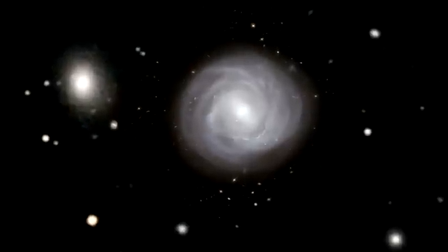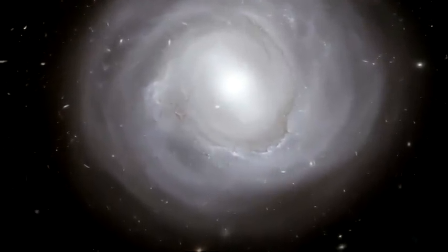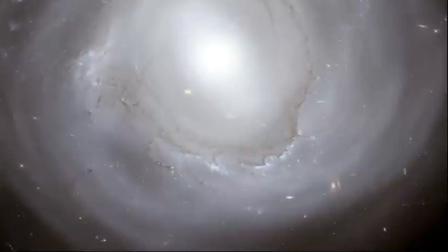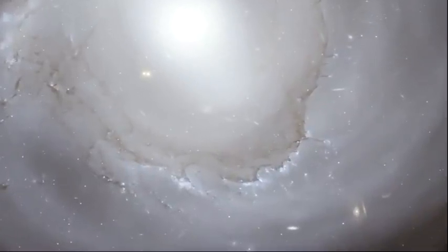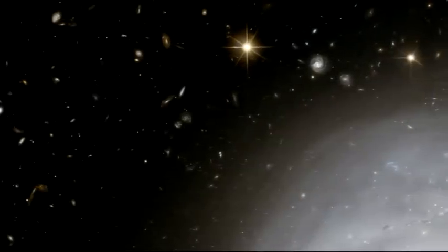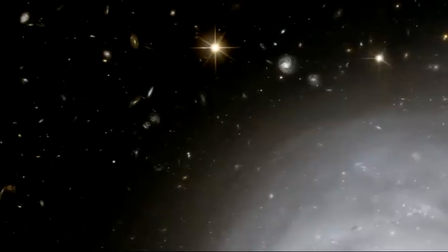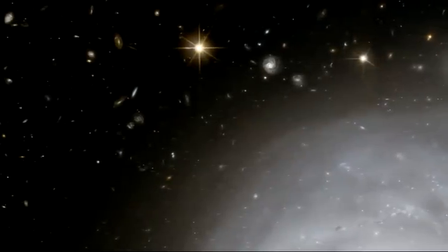Rich clusters like Coma are pretty crowded places and galaxies undergo many interactions and mergers. This constant slow activity gradually turns spiral galaxies, which are rich in dust and gas, into cleaner elliptical systems without much active star formation. As a result, there are far more ellipticals and fewer spirals in the Coma Cluster than are found in quieter corners of the universe.